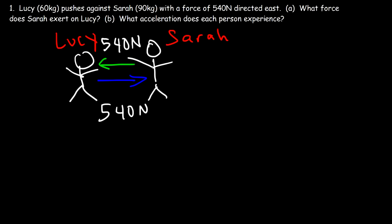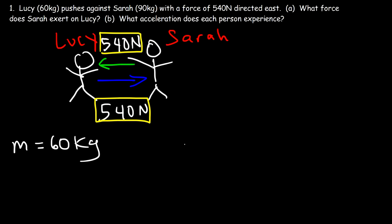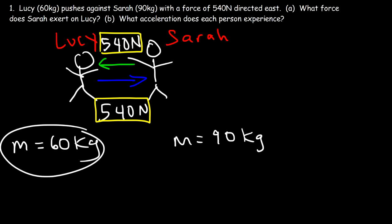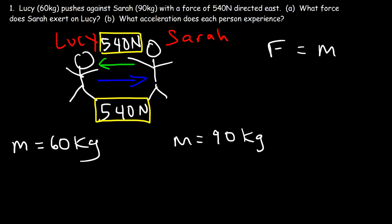The forces have to have the same magnitude but must be opposite in direction. Now, Lucy has a mass of 60 kilograms and Sarah has a mass of 90 kilograms — who experiences the greater acceleration? Because Sarah's mass is larger, her acceleration will be lower than Lucy's. Lucy is lighter, so she's going to experience the greater acceleration. To find acceleration, you can use the formula F = ma, so a = F/m.